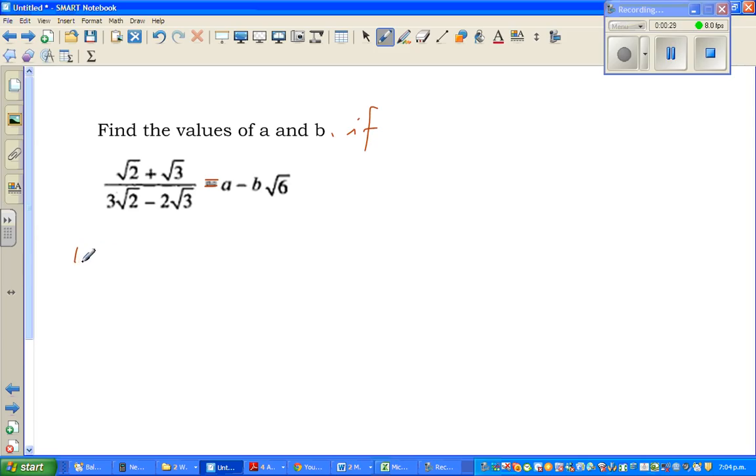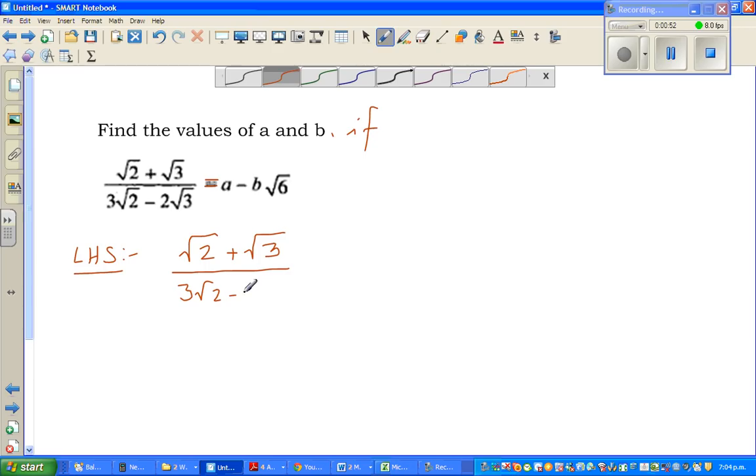Let us take the left-hand side and write LHS for left-hand side. So the left-hand side is root 2 plus root 3 over 3 root 2 minus 2 root 3. Whenever you want to simplify a third form, you have to rationalize the denominator.